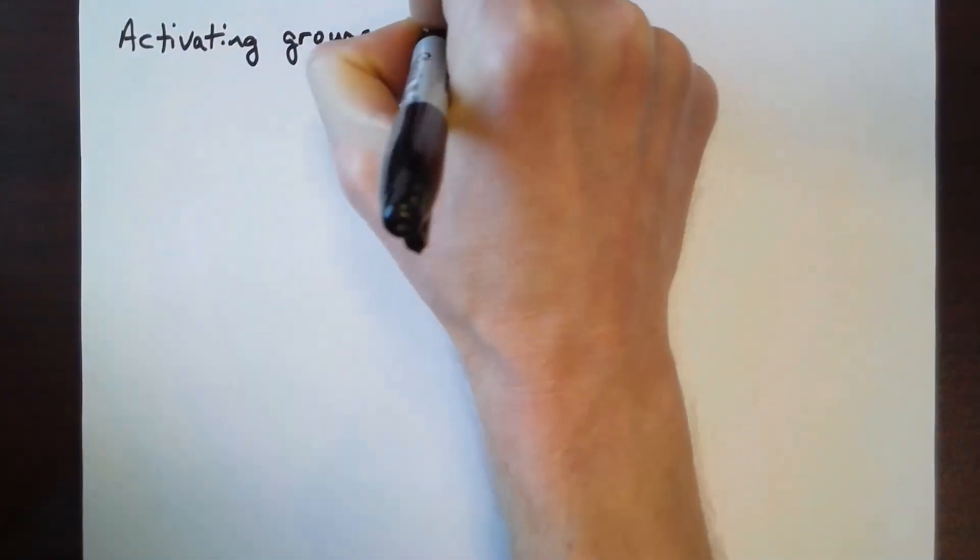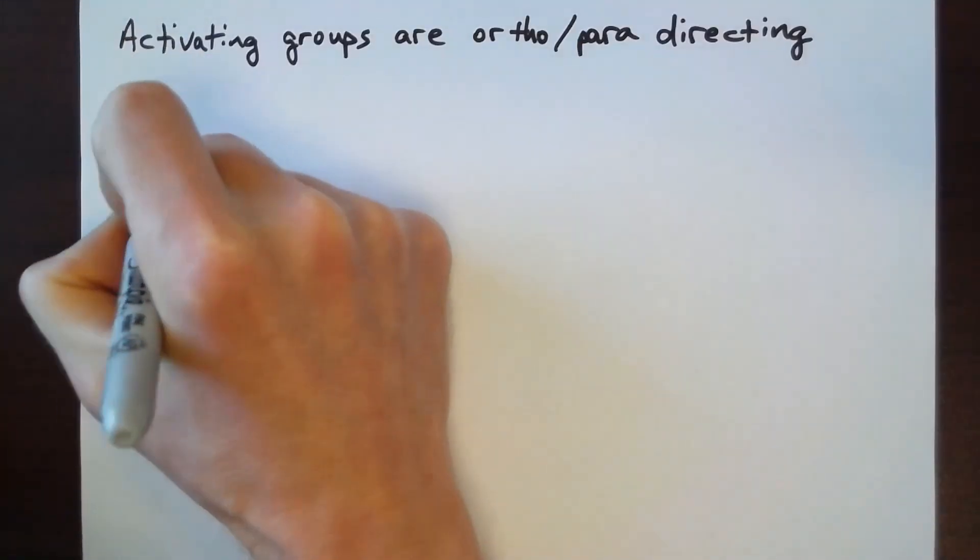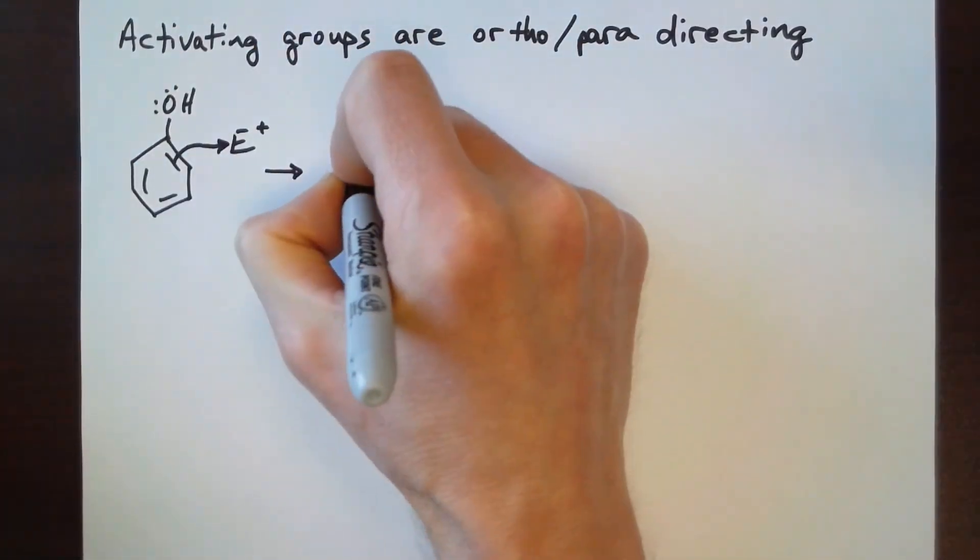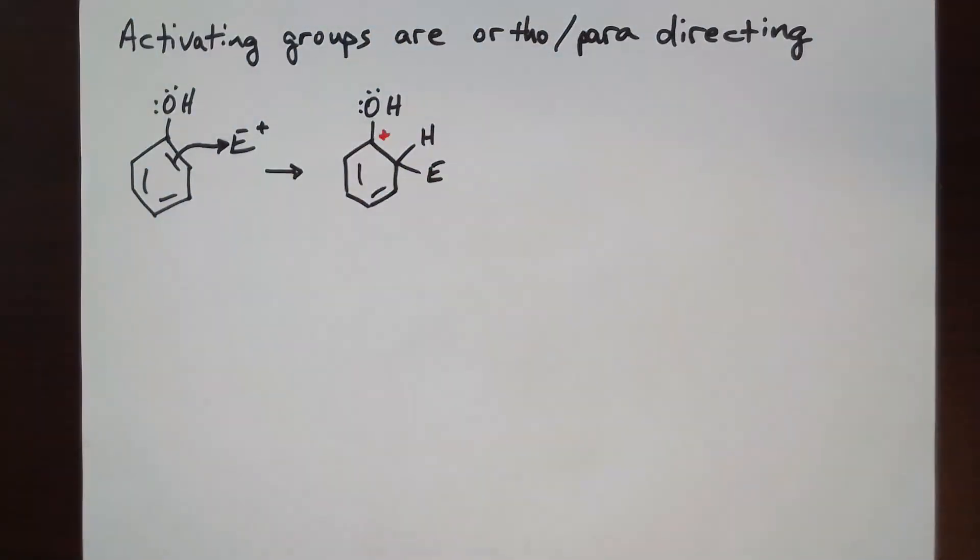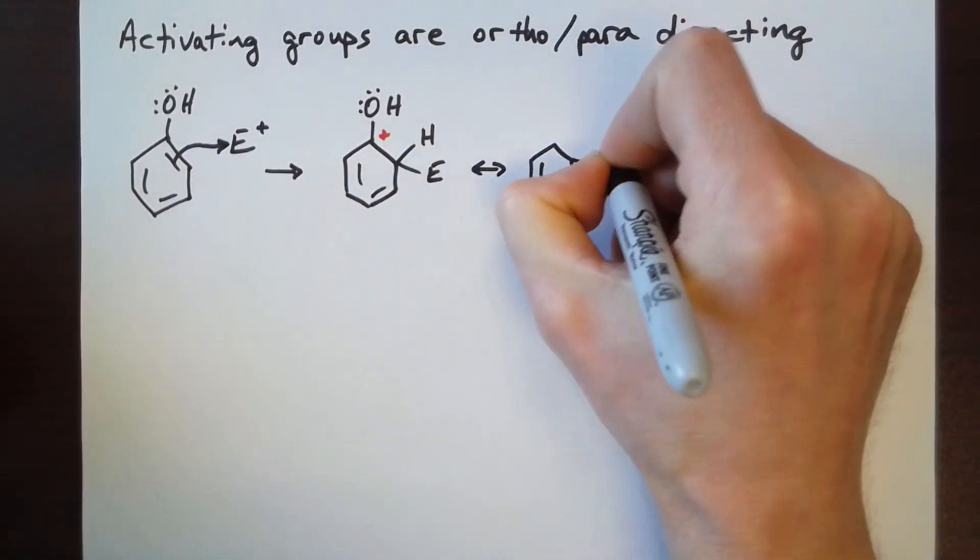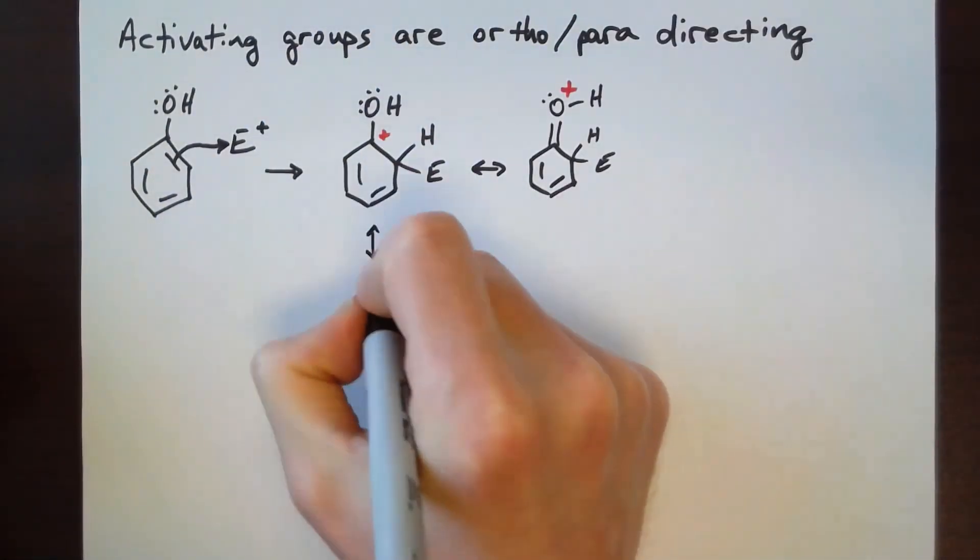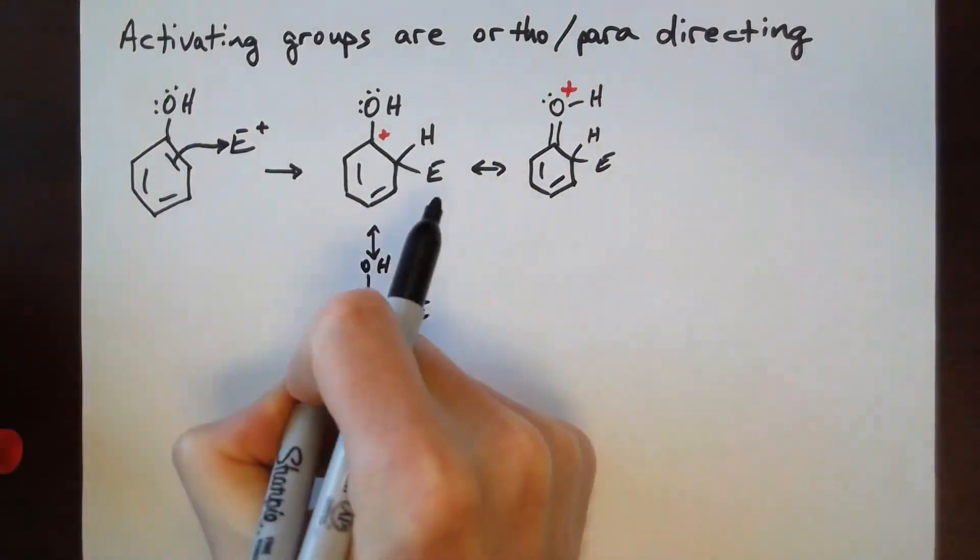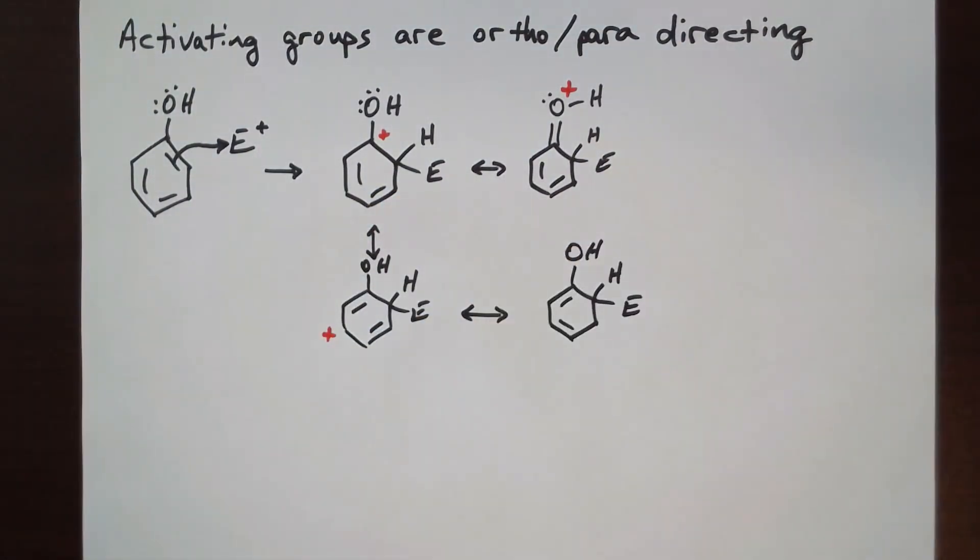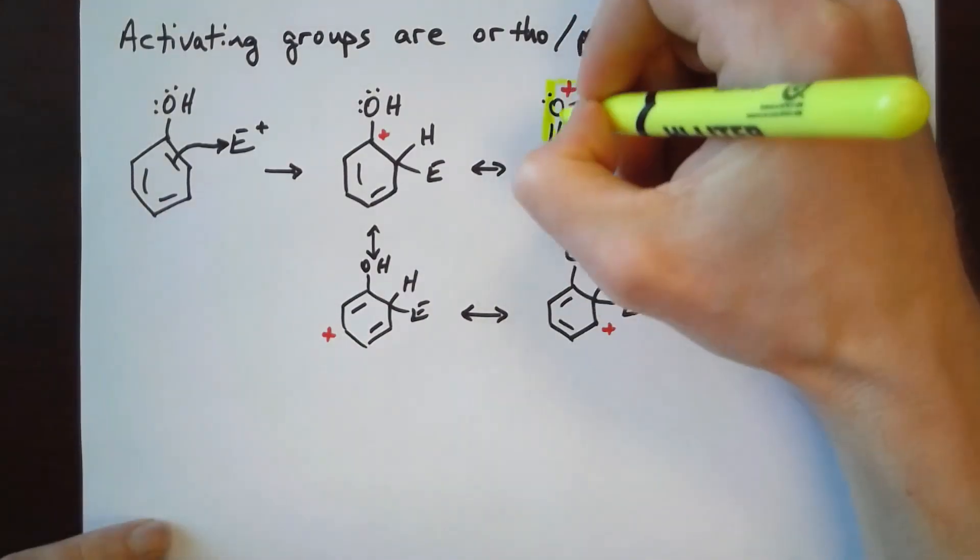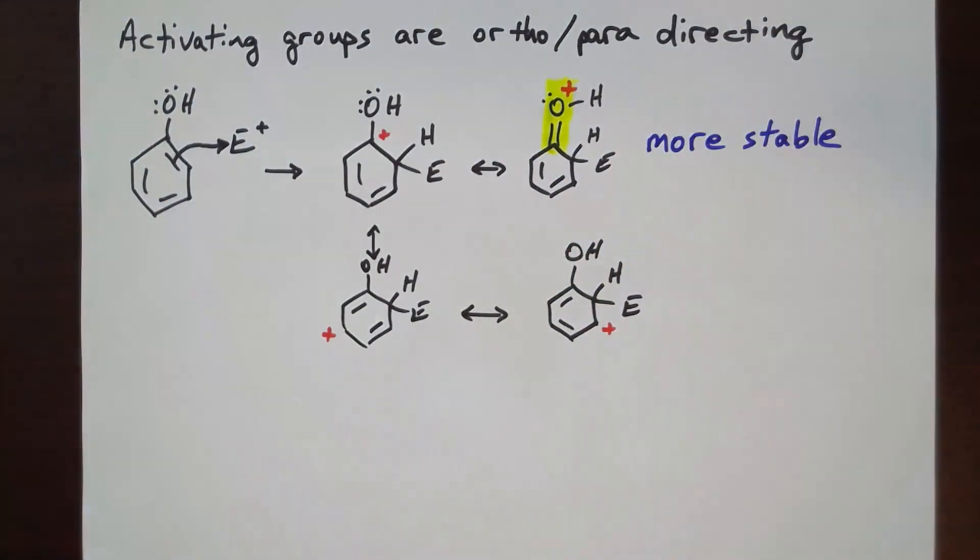Activating groups, such as hydroxyl groups, and weakly deactivating groups, such as halogens, are ortho-para-directing. Here we only show ortho-substitution, but similar resonance structures can be drawn with para-substitution. If the electrophile adds in the ortho position next to the hydroxyl group, then we can draw four resonance structures. The more stable resonance structure is when the positive charge is on the oxygen atom, when the hydroxyl group is donating electrons by resonance.